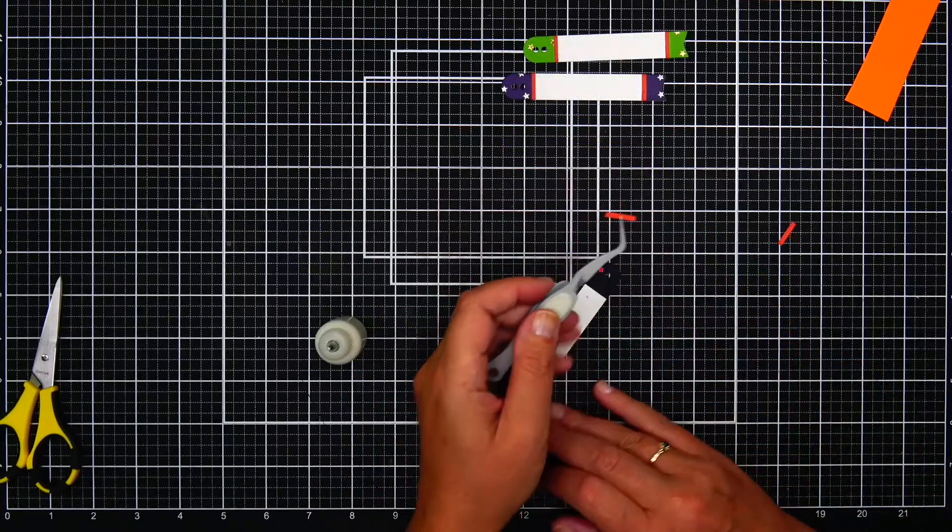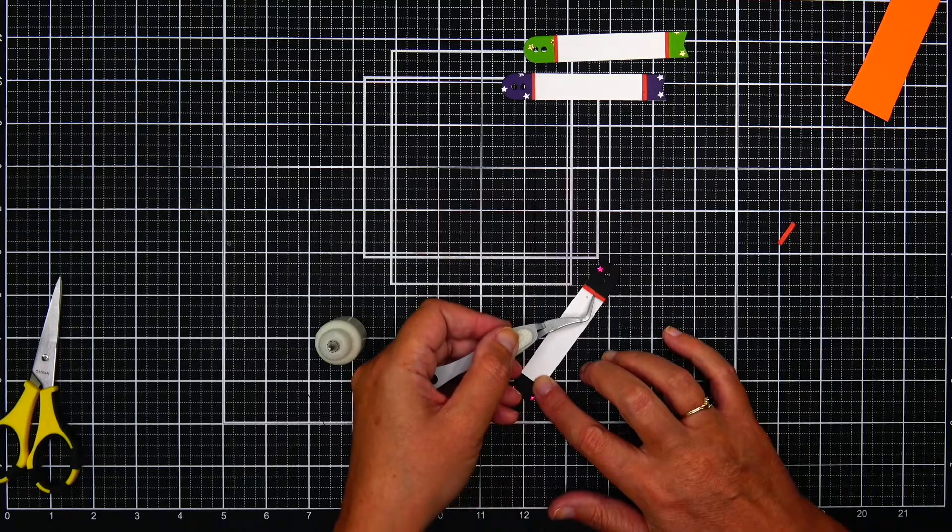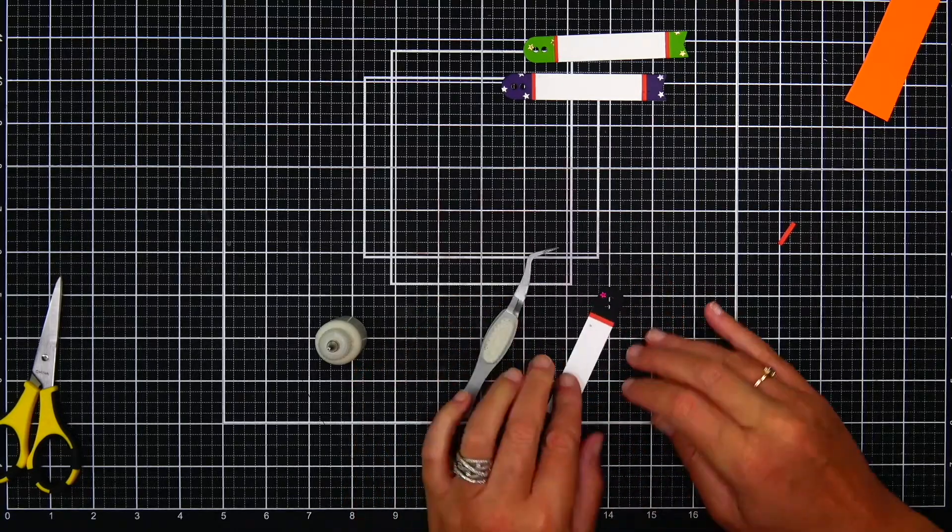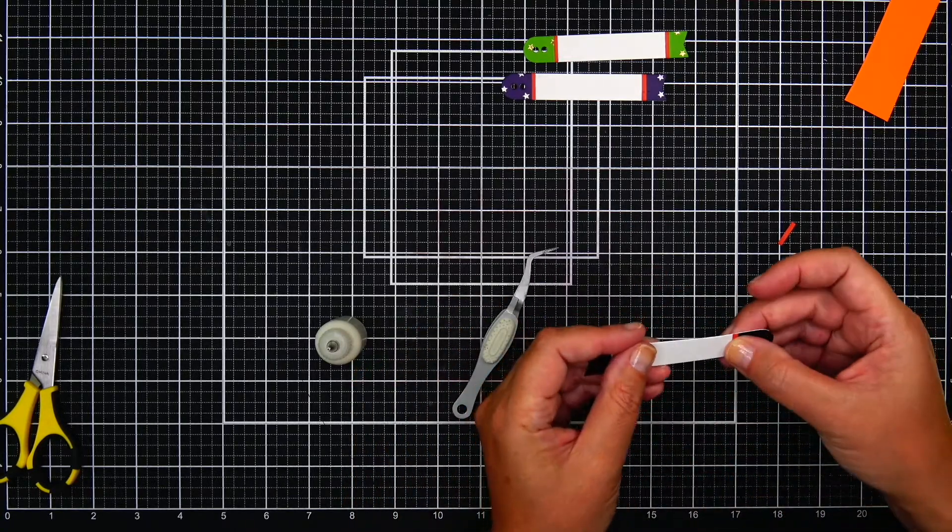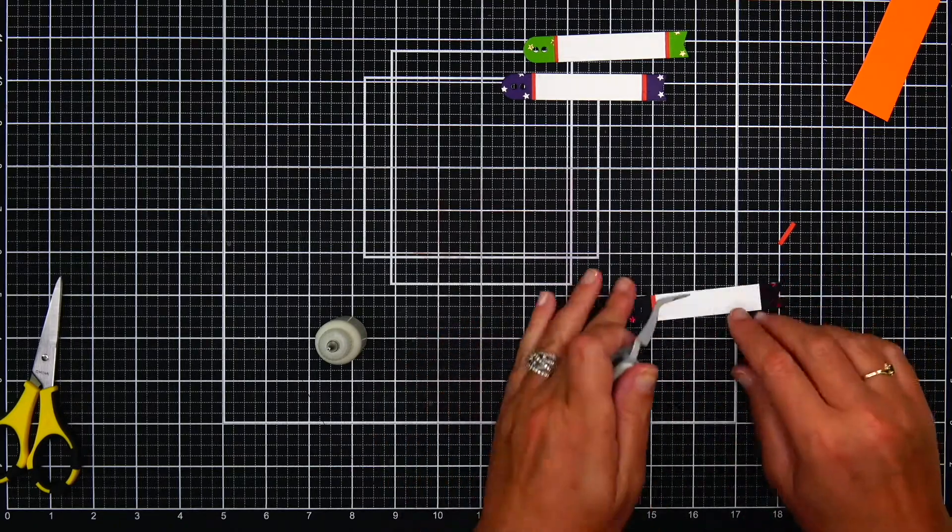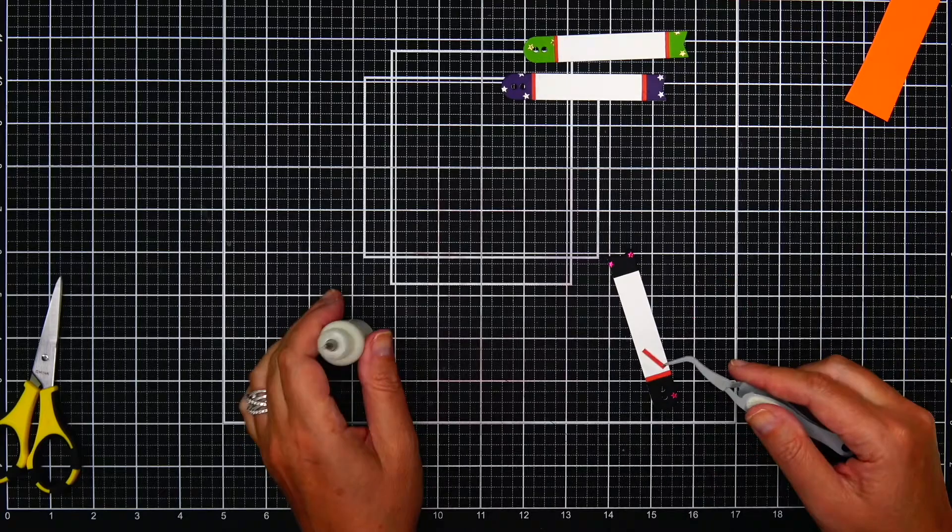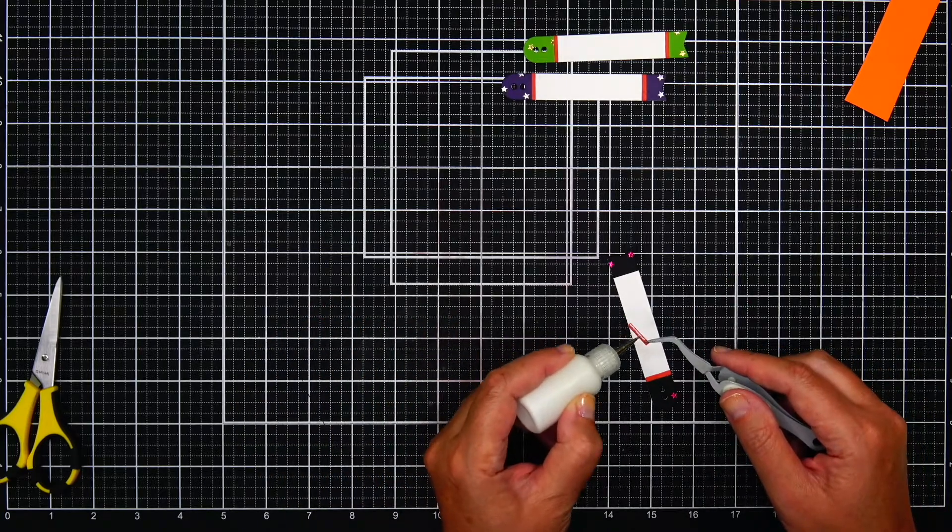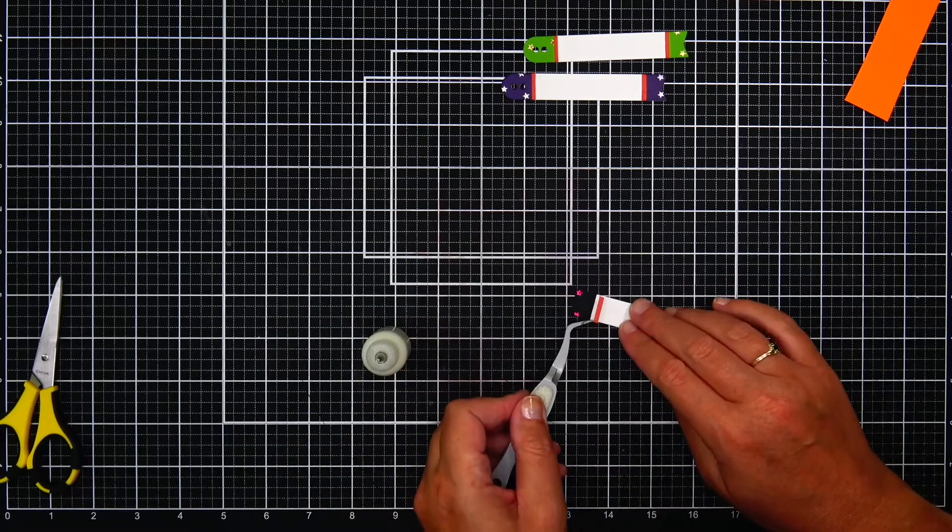I can take a small strip of orange and put it on the top and the bottom next to the colored cardstock. Since I was using the same sentiment for all four tags, I assembled the tags first with the colored cardstock and the little orange strips.